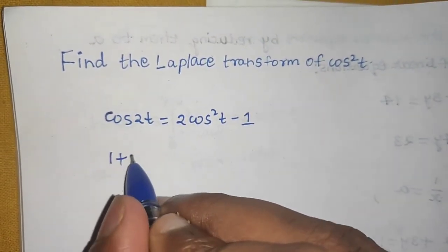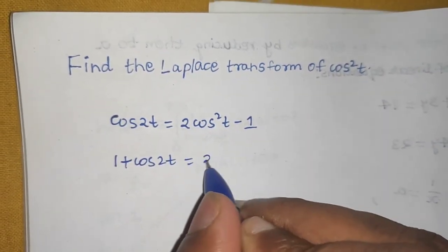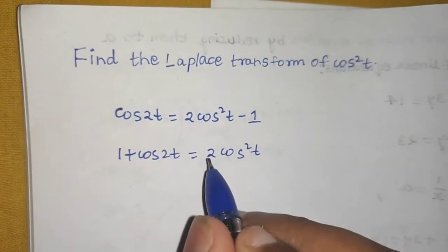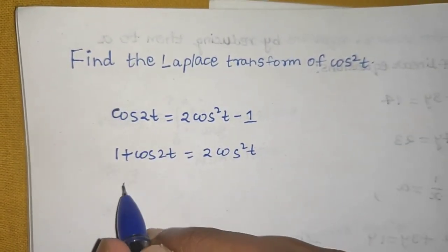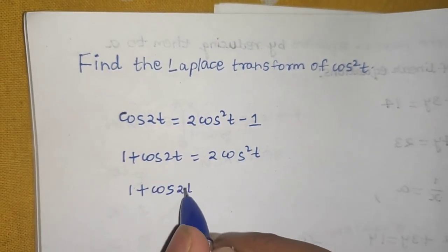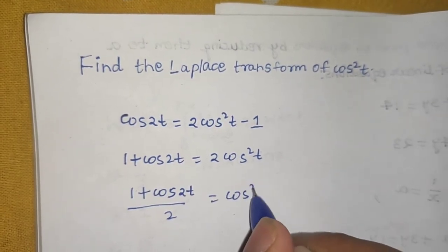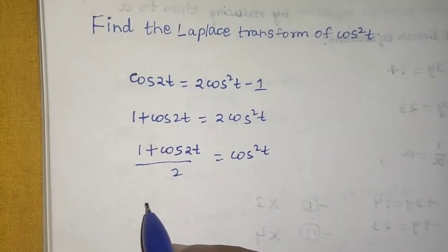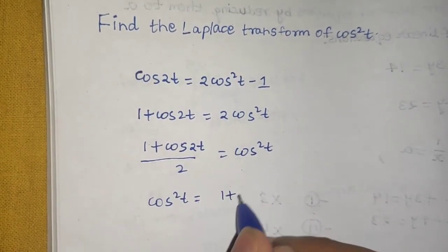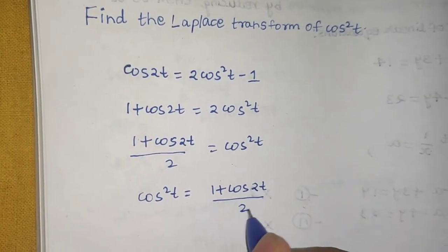So 1 plus cos(2t), when simplified, gives us 2cos²(t). We also don't want the 2, so divide both sides by 2. We get (1 + cos(2t))/2 = cos²(t), or written the other way: cos²(t) = (1 + cos(2t)) / 2.